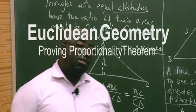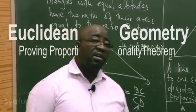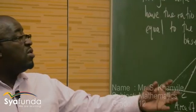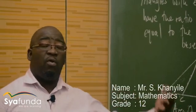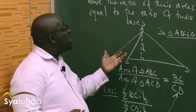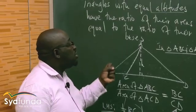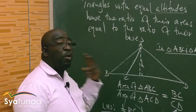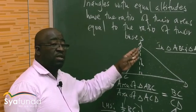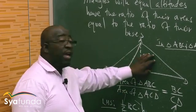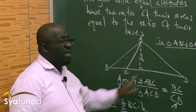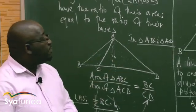I want us to prove the Proportionality Theorem here. This theorem will be much easier to understand if we remember that triangles with equal altitudes — meaning both triangles must have the same altitude — allow us to say the area of one over the area of the other equals this base over that base. Now let's come to this theorem.